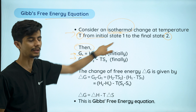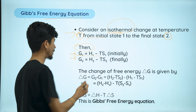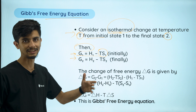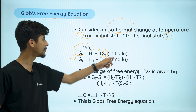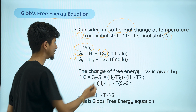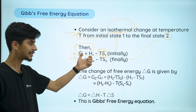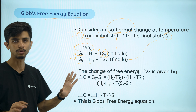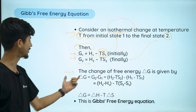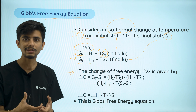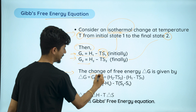For state 1, G equals H minus TS. For state 2, G equals H minus TS. When you find the change, we will do final minus initial.